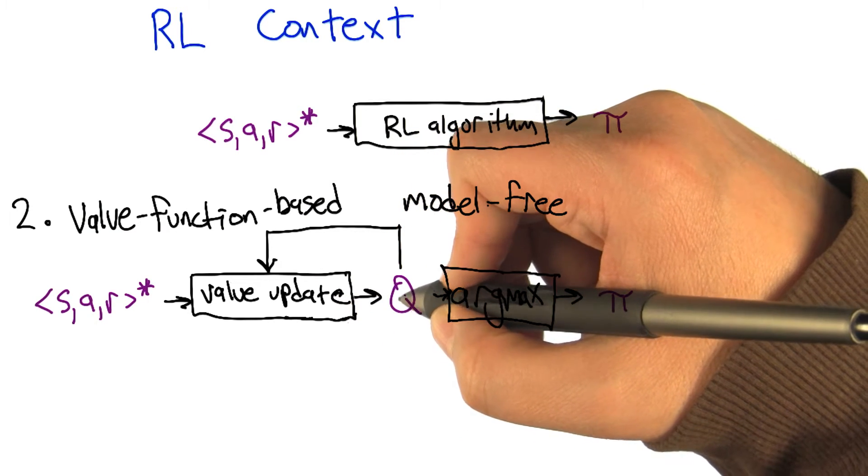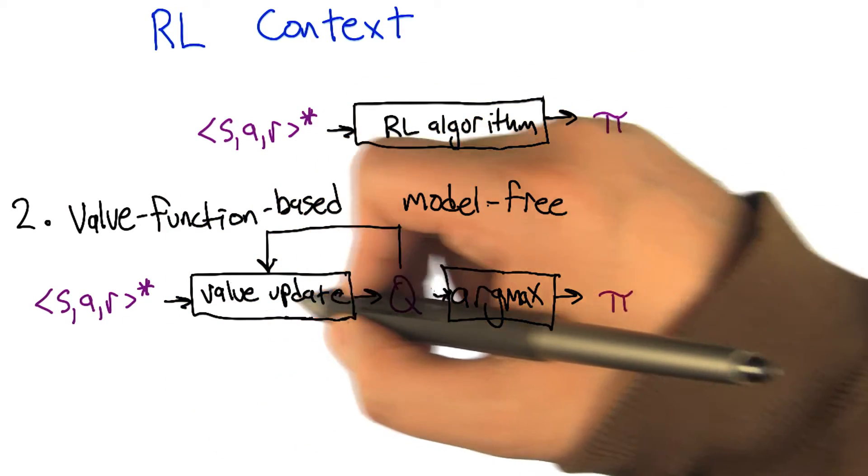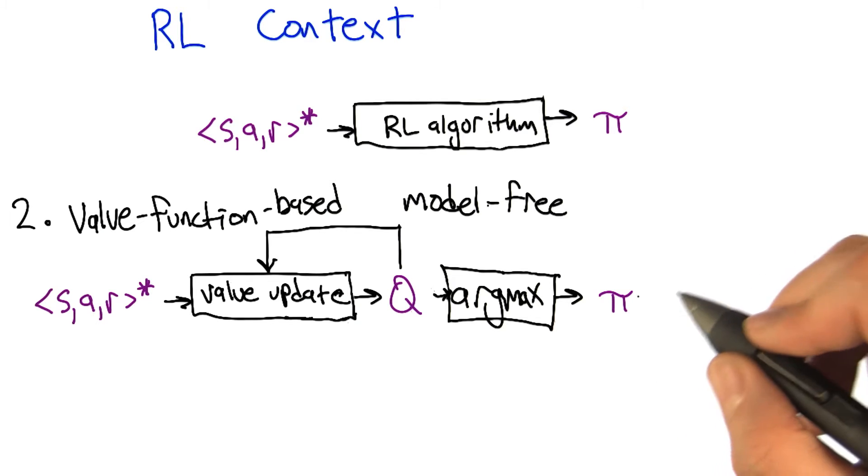So instead of explicitly building a model and using it, it just directly learns the Q values from state actions and rewards.